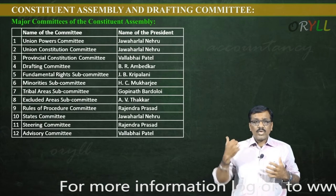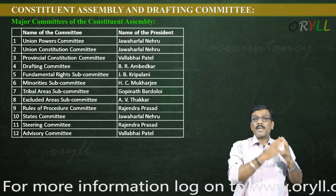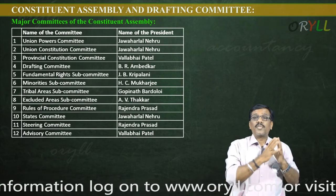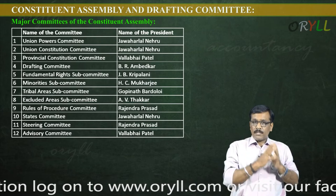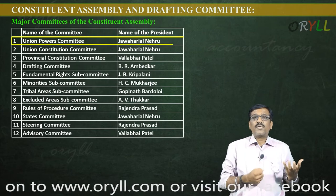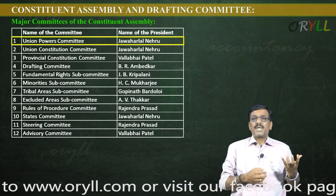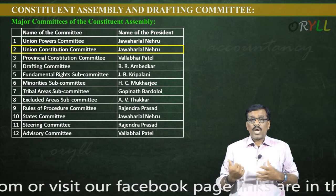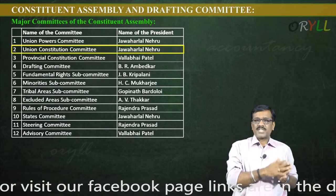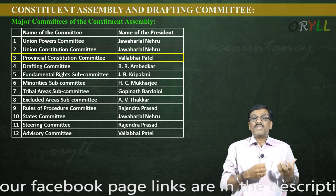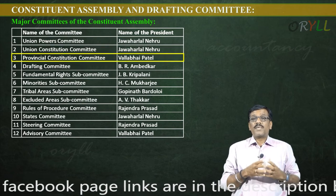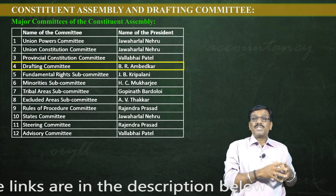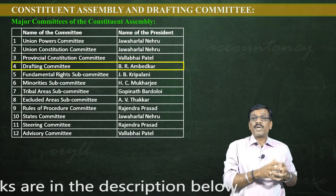Though there were 22 committees, some of the major committees of the Constituent Assembly include: the Union Powers Committee and Union Constitution Committee, headed by Jawaharlal Nehru; along with the States Committee and Provincial Constitution Committee, headed by Sardar Vallabhbhai Patel.